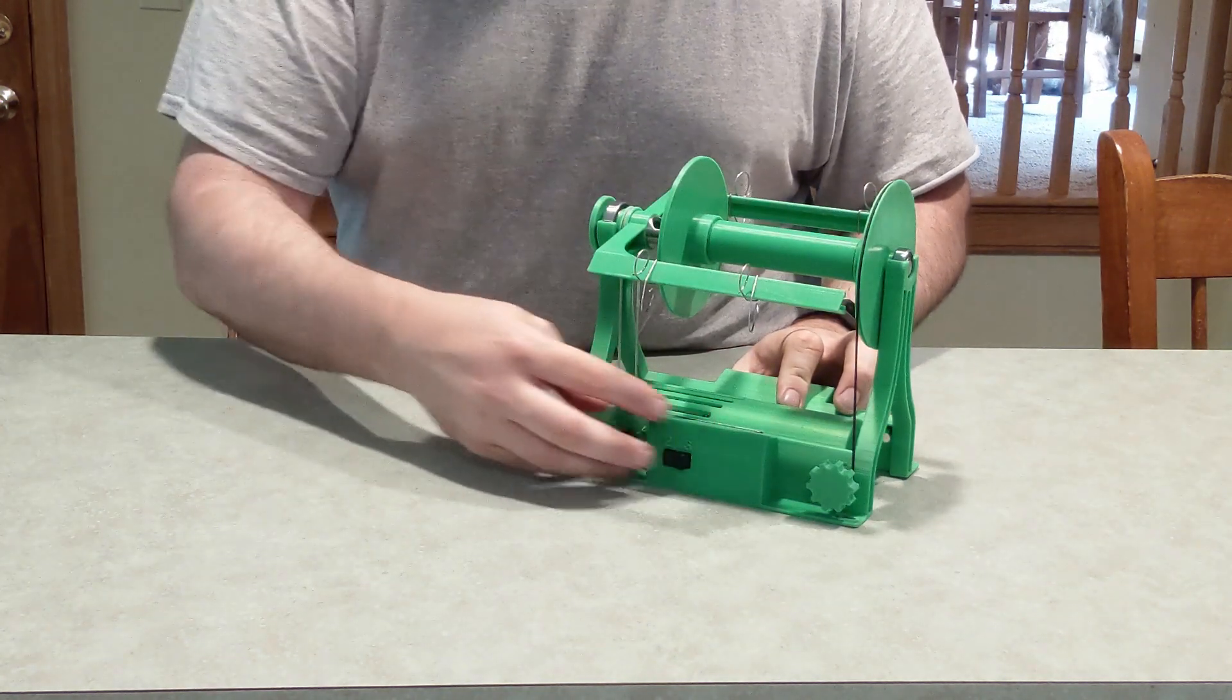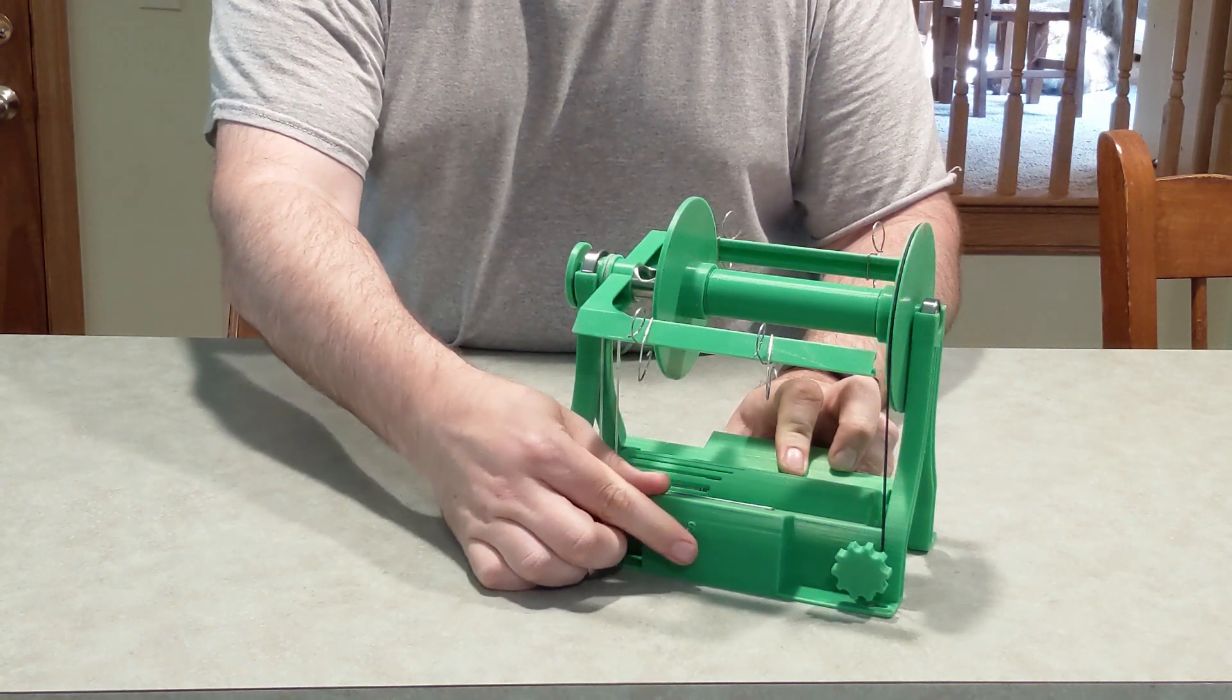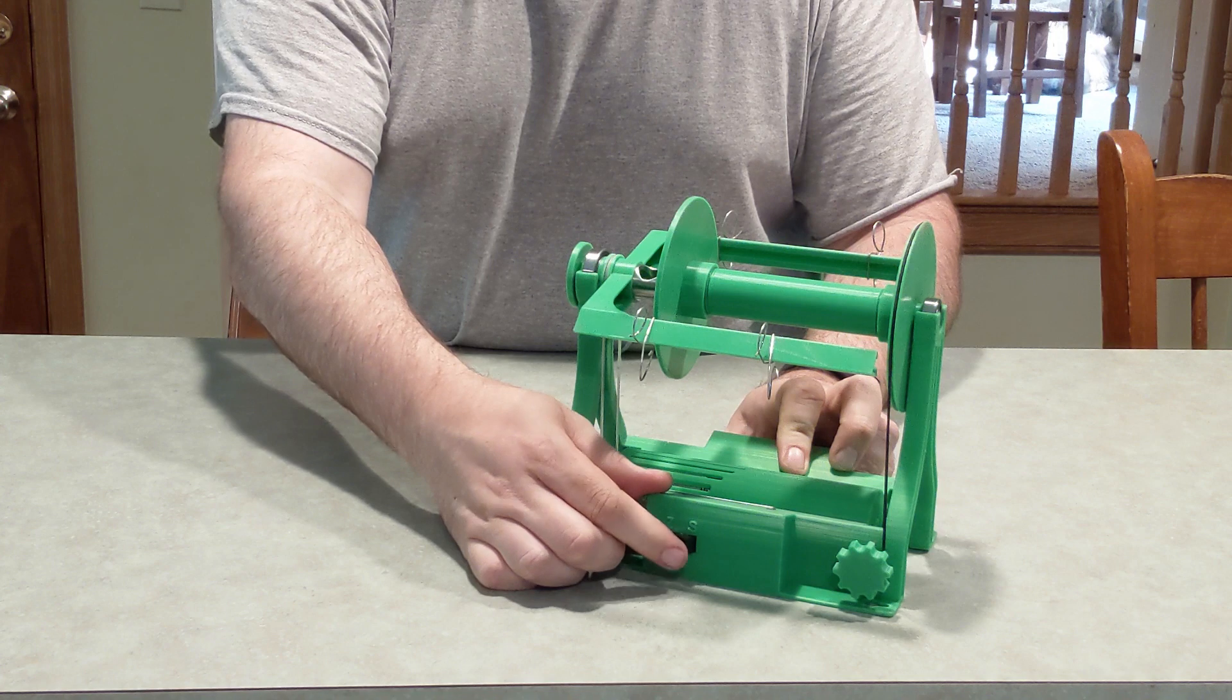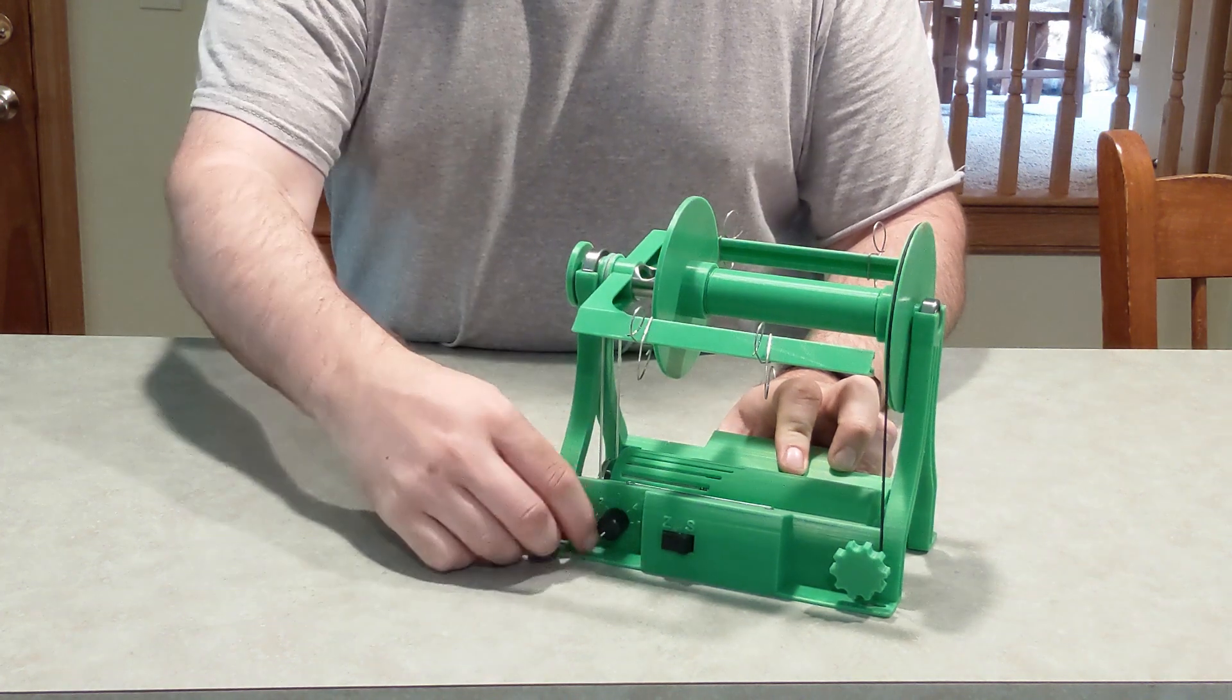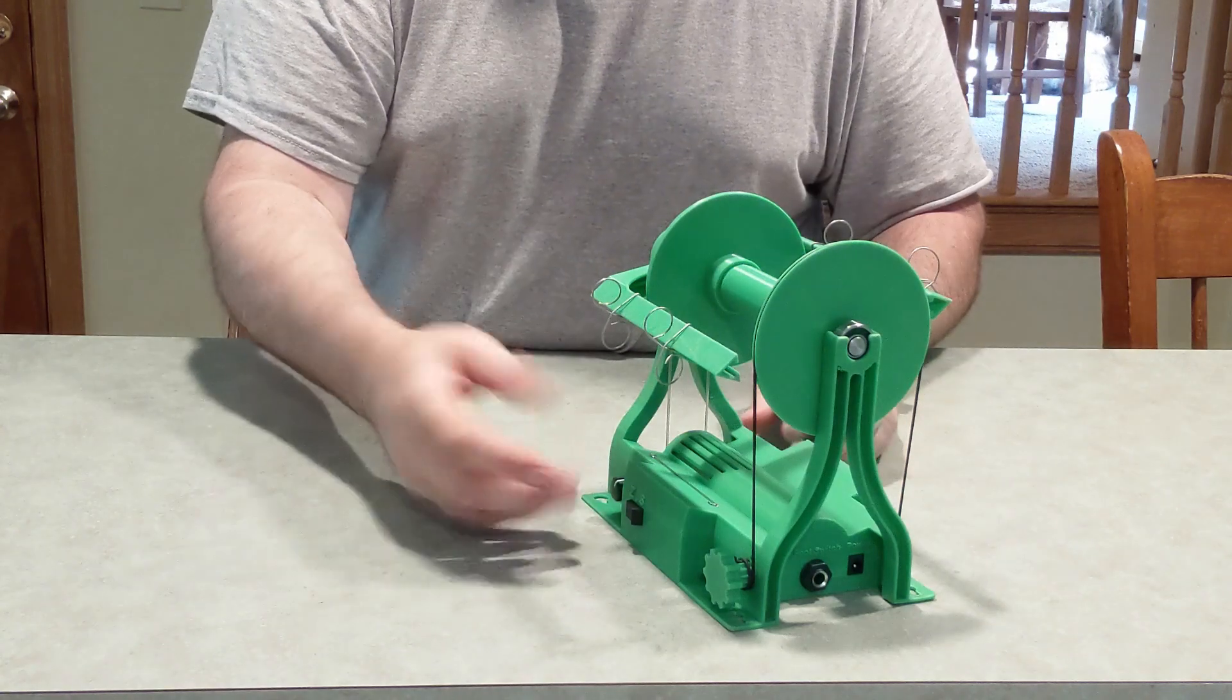Based on some feedback I moved the controls around a little bit. So now this is the switch that controls Z twist, S twist, and off, and this is the dial that controls the speed, and they're both very easy to get to.